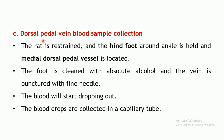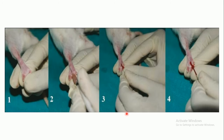The next method is dorsal pedal vein blood sample collection. The rat is restrained, the hind foot around the ankle is held, and the medial dorsal pedal vein is located. The foot is cleaned with absolute alcohol, then the vein is punctured with a fine needle. Blood drops out and is collected in a capillary tube.